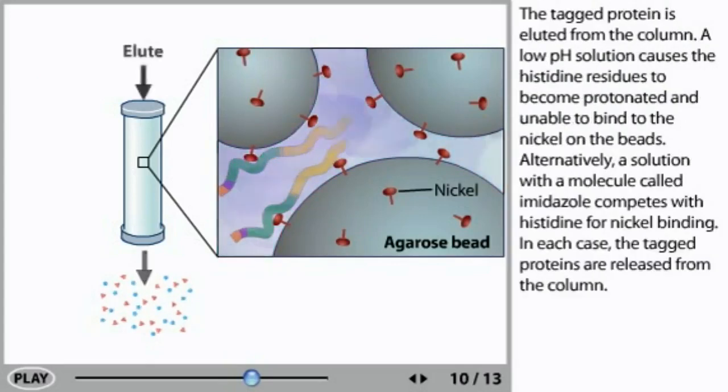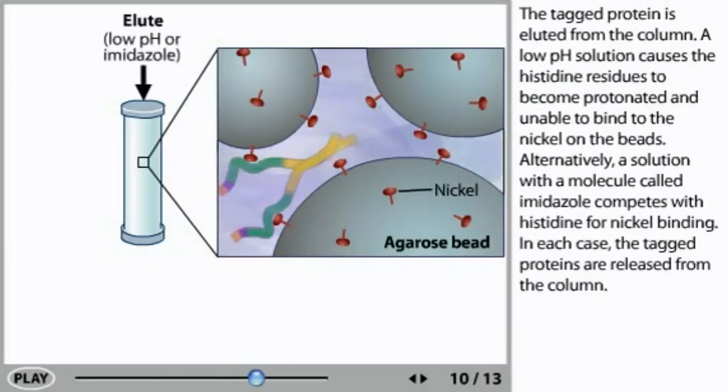The tagged protein is eluted from the column. A low pH solution causes the histidine residues to become protonated and unable to bind to the nickel on the beads. Alternatively, a solution with a molecule called imidazole competes with histidine for nickel binding. In each case, the tagged proteins are released from the column.